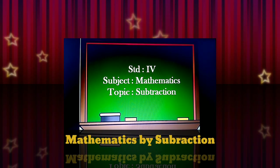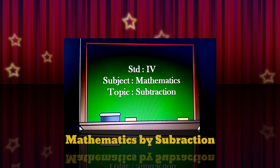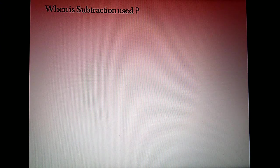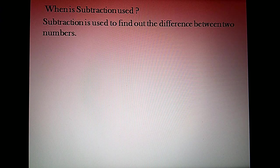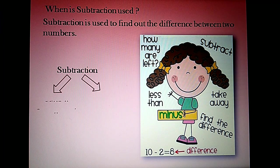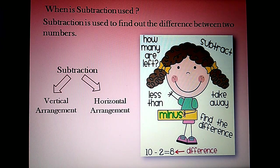Hello children! Today in mathematics for standard 4, we are going to learn lesson number four: subtraction. Subtraction is used to find out the difference between two numbers. Subtraction can be done in two methods: one is the vertical arrangement and the second one is the horizontal arrangement.